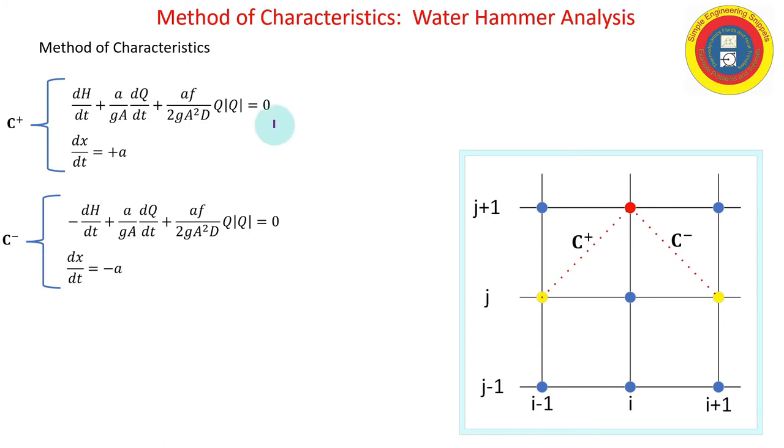Okay. So, the method of characteristics takes our partial differential equations and converts them into ordinary differential equations. The c-plus characteristics are valid along the c-plus characteristic as shown in this grid. And the c-minus characteristic is valid along the c-minus characteristic as shown in this grid.